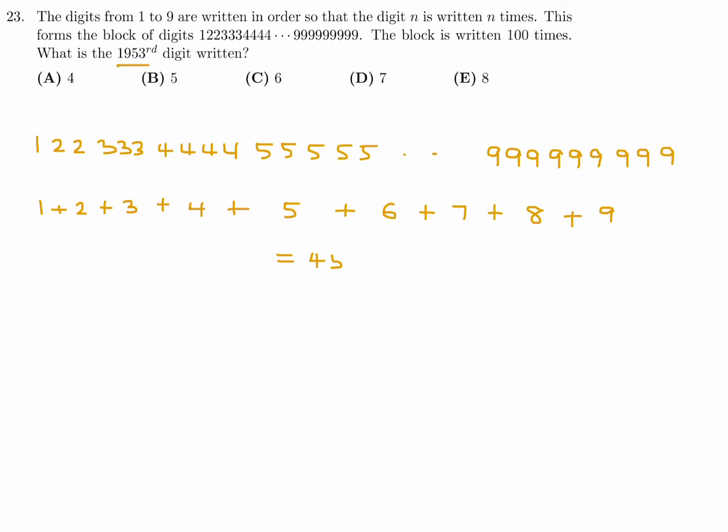So if I want to figure out the 1953rd digit, I have to divide 1953 by 45. And when I do, I get 43.4. And what that means is that there's 43 strings, but then we've got a remainder. So 43 with a remainder of 18. So this string appears 43 times in a row, and then there's 18 more numbers.